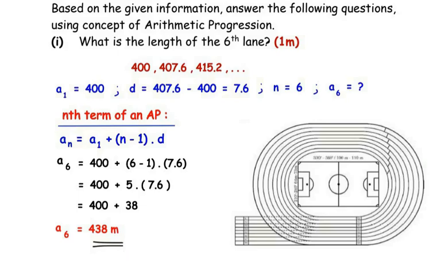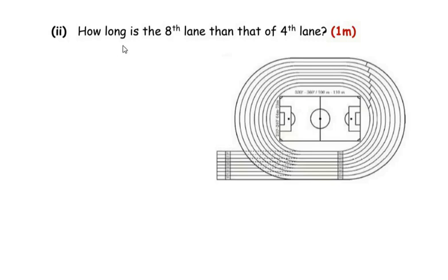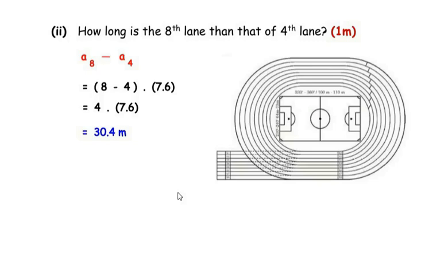Now let us move to the second question: how much longer is the 8th lane than the 4th lane? We need to subtract the length of the 4th lane from the 8th lane. You can use two methods — the nth term formula to find a8 and a4 separately, or the shortcut: (8 − 4) × d = 4 × 7.6 = 30.4 meters.